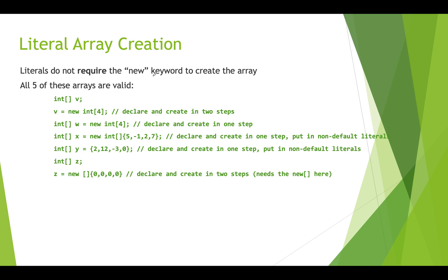We typically don't need to use the new keyword, and there are many different ways to create an array. Looking at five examples: array v is declared as an array of ints, then on the next line v equals new int four — this is a two-step approach to create an array holding four ints. Another version: int w is a reference pointer to an array of ints, and we create the actual array with four slots all in one step.